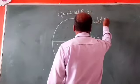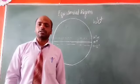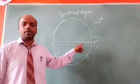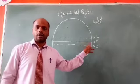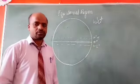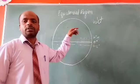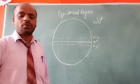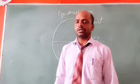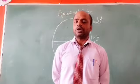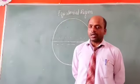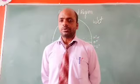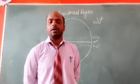Why is the equatorial region hot and wet? Because the sun shines directly towards the equatorial region. Also, this region is mostly formed by seas and oceans. Due to the sun's rays, the water of the ocean or sea is converted into vapors, which rise up and form clouds. So this region is wet with high humidity.